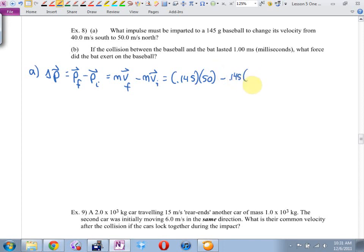Caitlin, negative 40. Or I could have let the final be negative and the initial be positive, but I'm telling you, I have to let them be opposites. What change in momentum, if I want to turn on a pitcher's 40 meters per second pitch and send it out of the park at 50 meters per second, what impulse do I need to give that baseball?